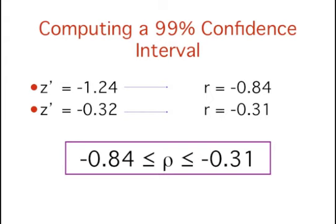Converting our Z' values back to R, a Z' of negative 1.24 is associated with an R of negative 0.84, and a Z' of negative 0.32 is associated with an R of negative 0.31.